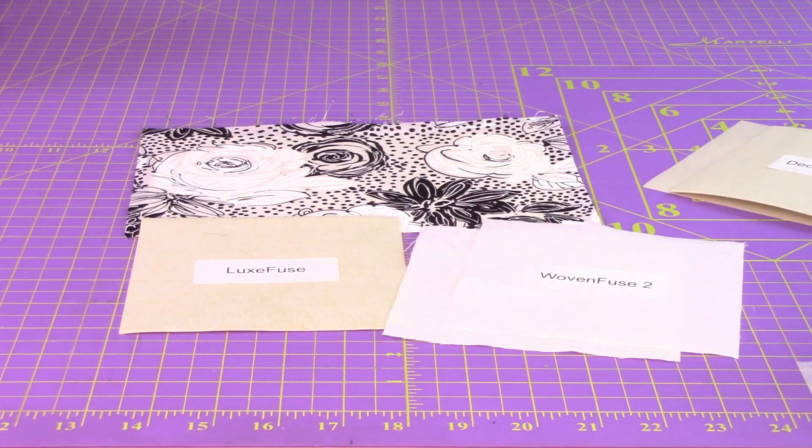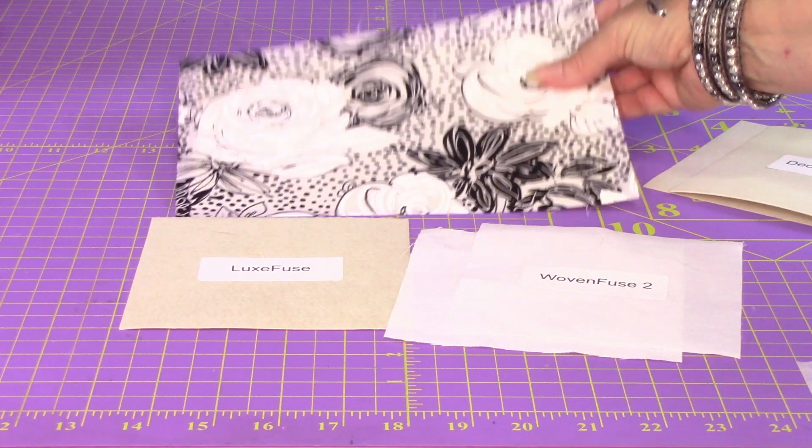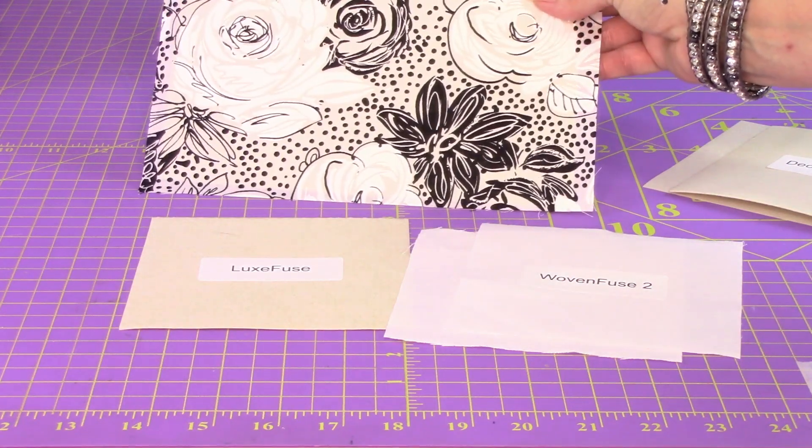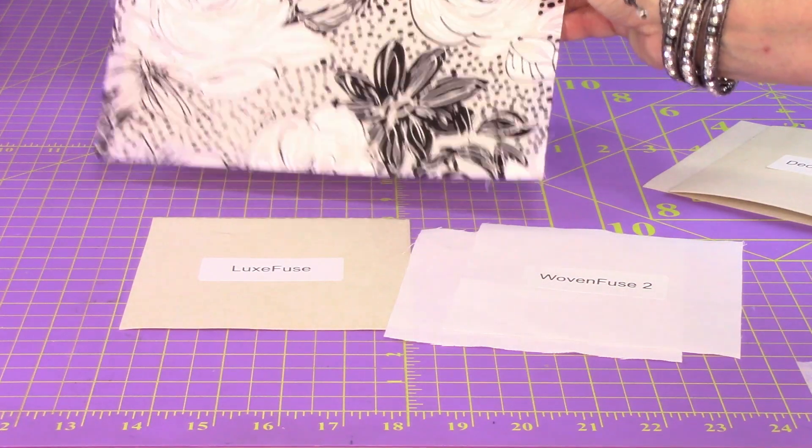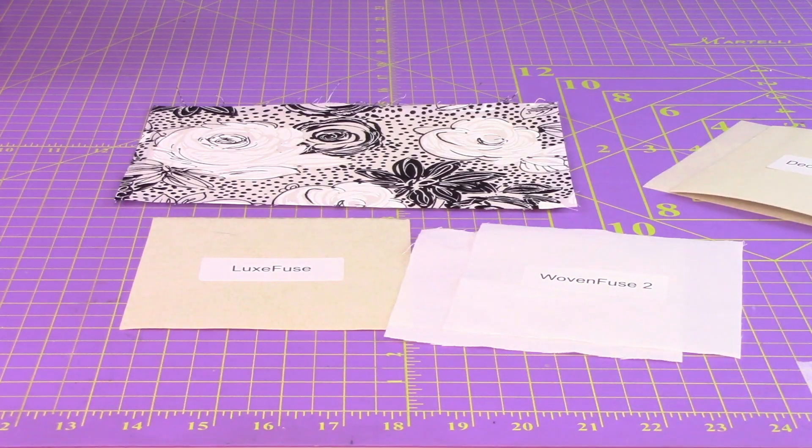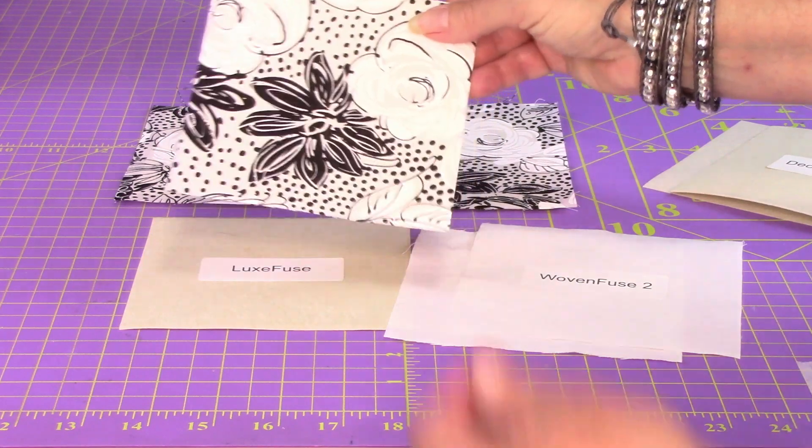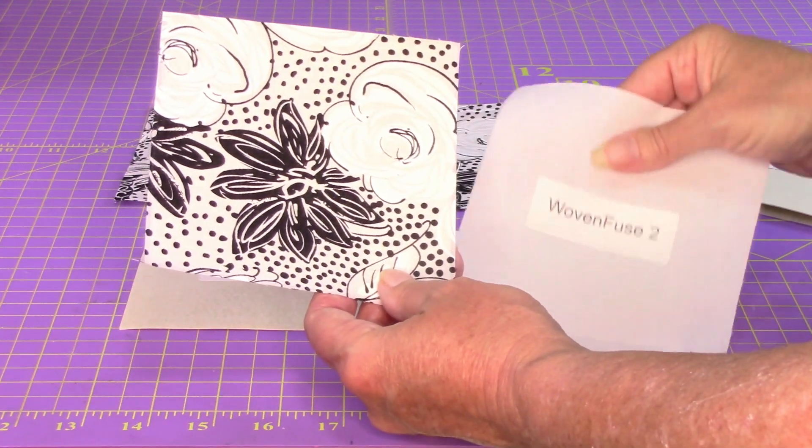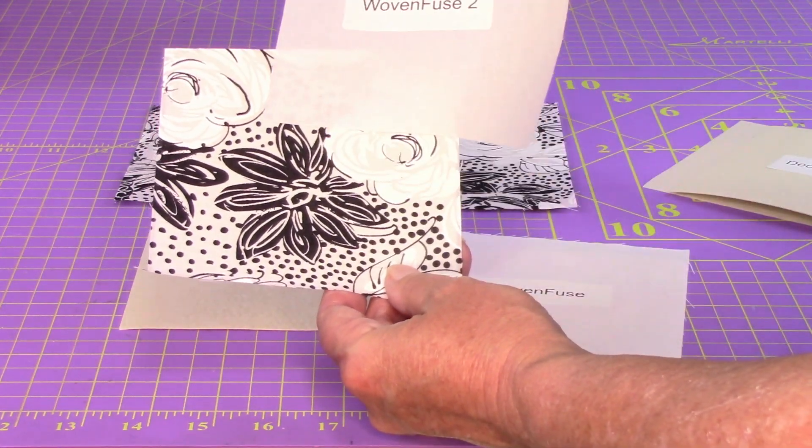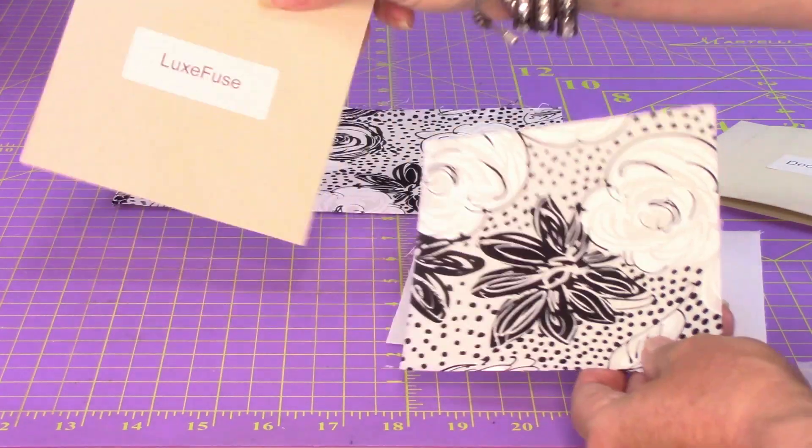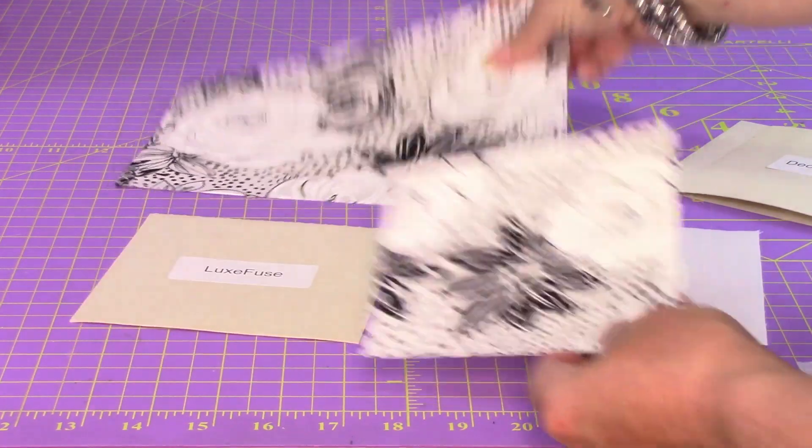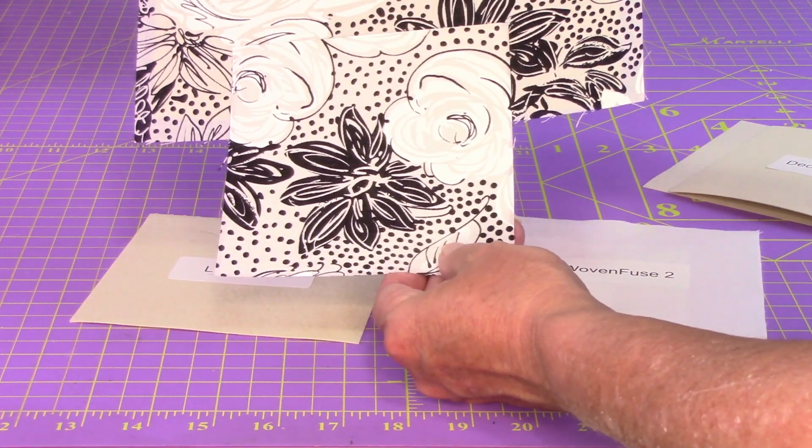And if you have a piece of fabric that's a little bit see-through like this one is, that color is going to come through. I made another sample. Here it is. Look at this one. Same fabric.